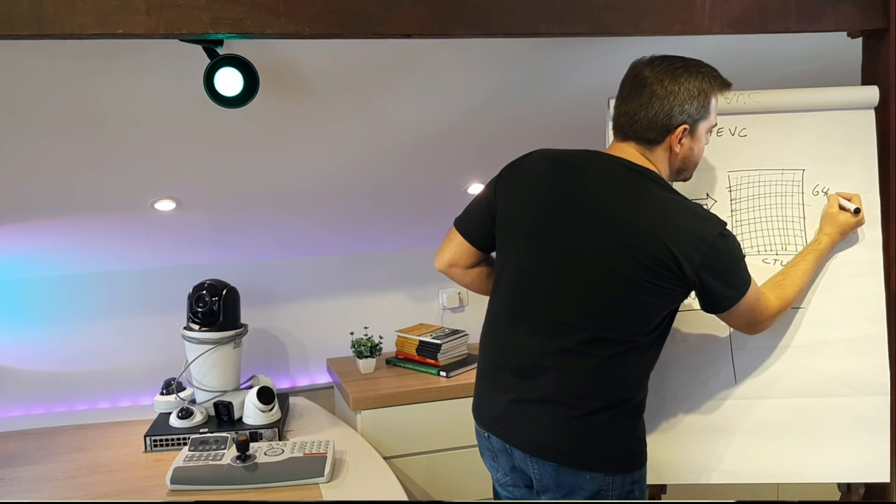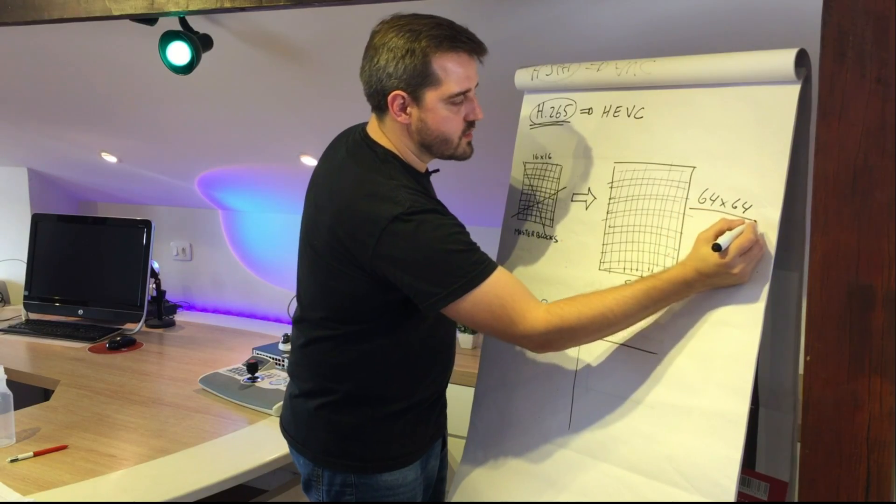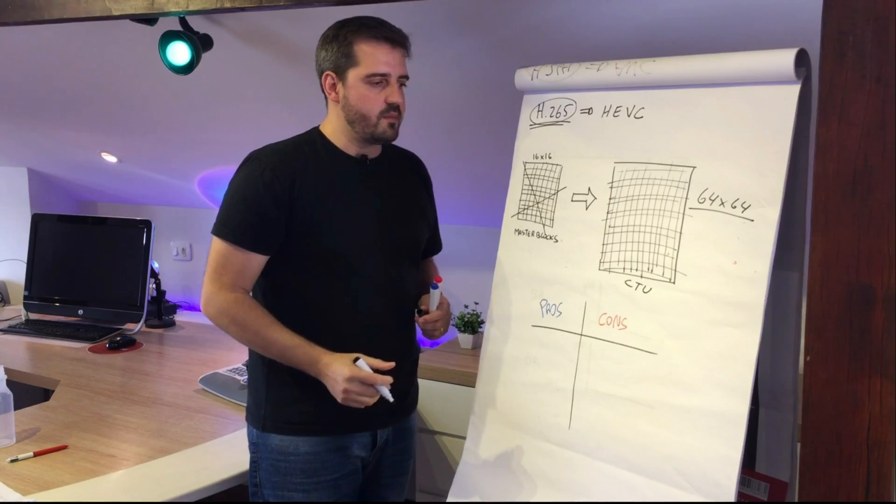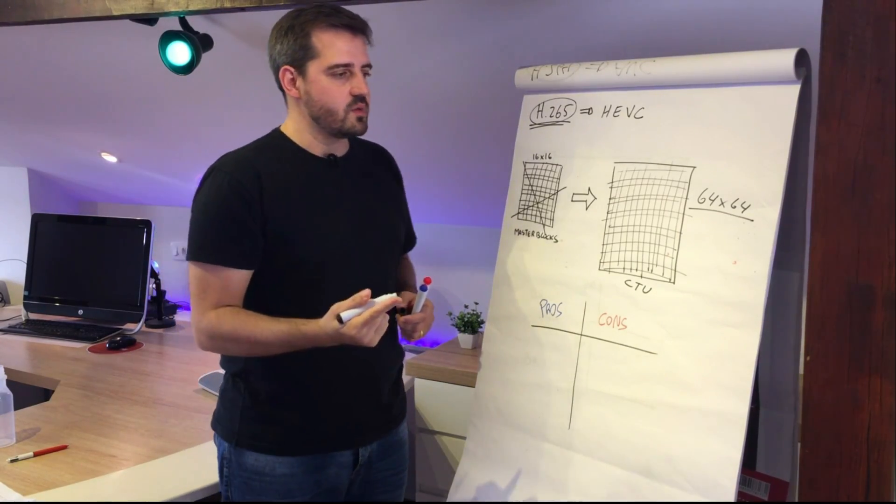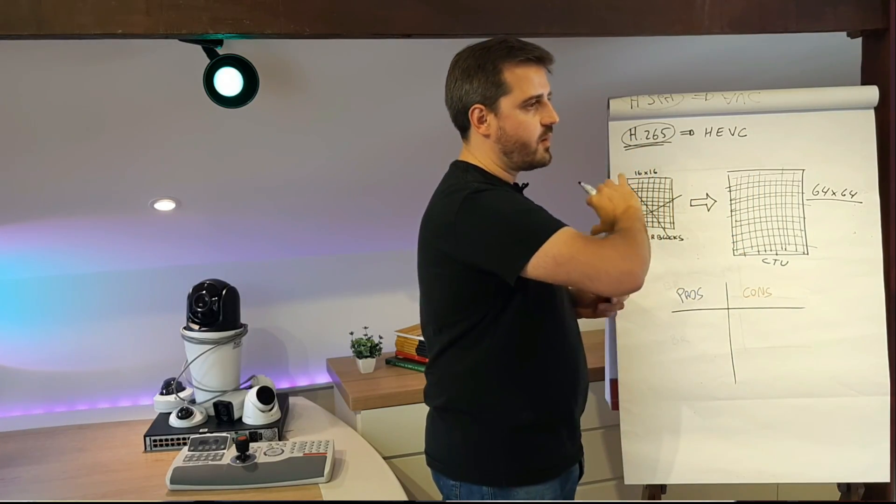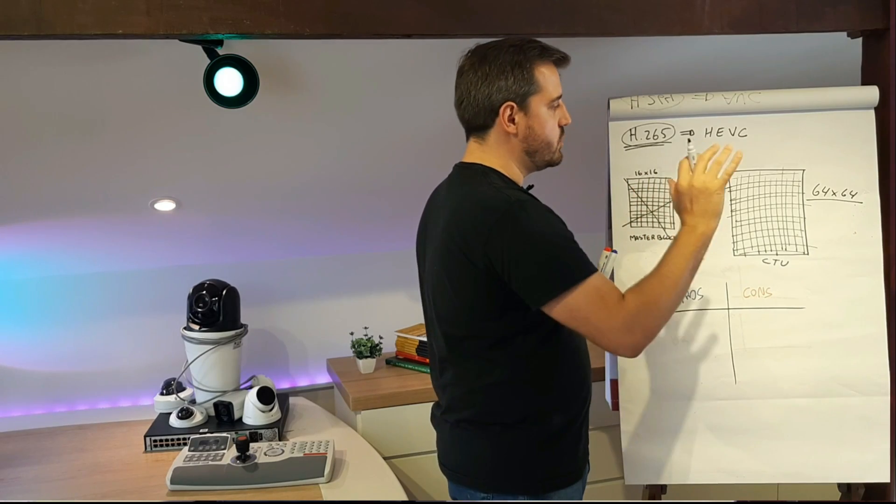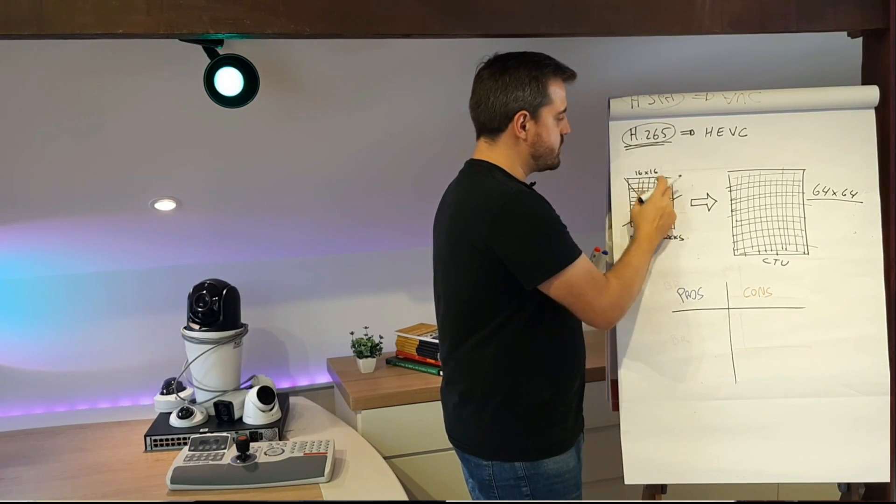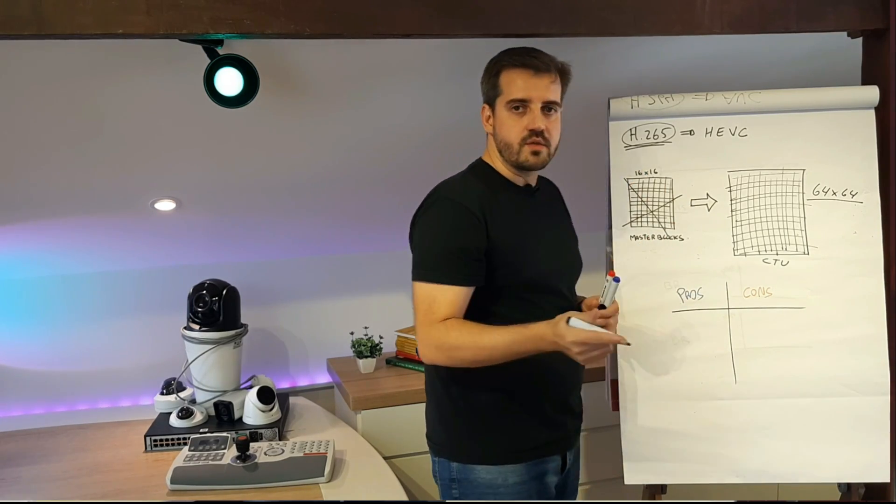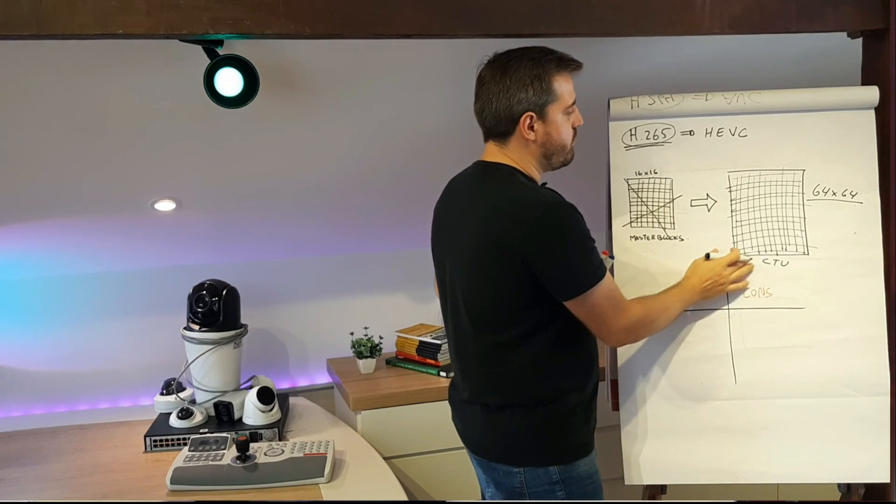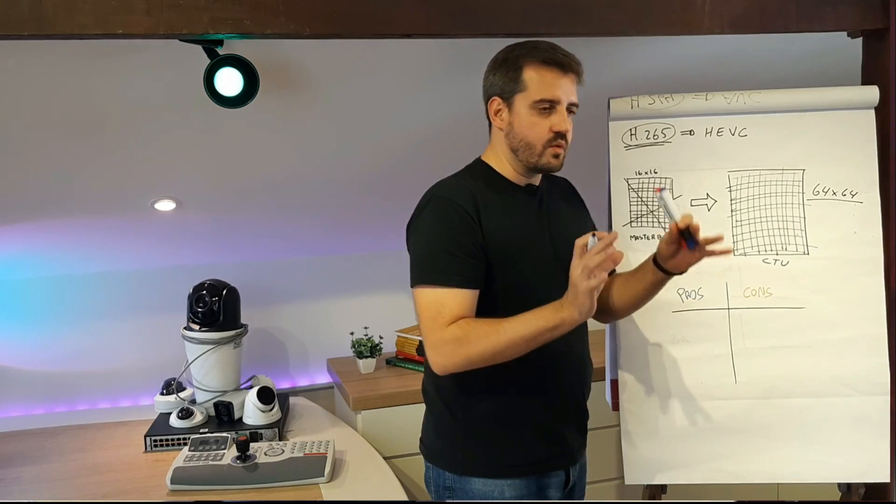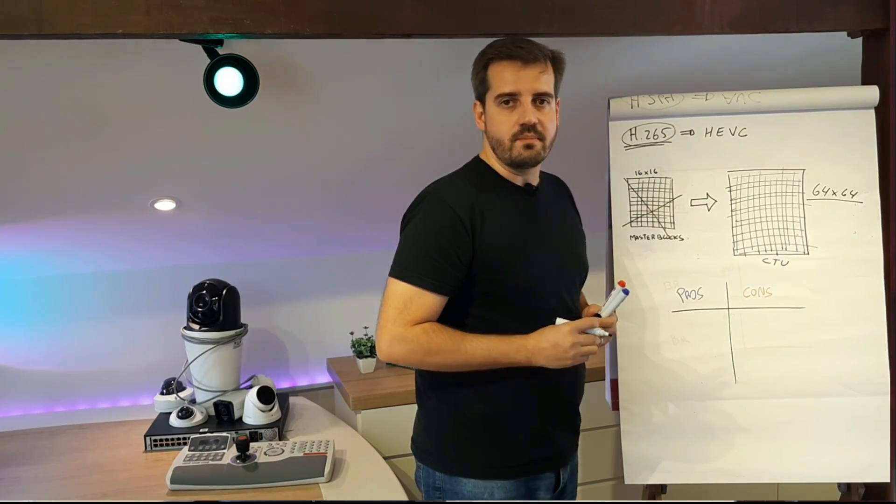This means we can compress more information in just one pixel and send to the NVR or client. Let's assume we have in the scene a part of the sky, so it's all blue. In H.264 we can group 16 by 16 of the same pixels, but in H.265 we can group more pixels and send information like blue. We can group similar information as the same pixel, so this will reduce a lot the bitrate and storage needed in the NVR.